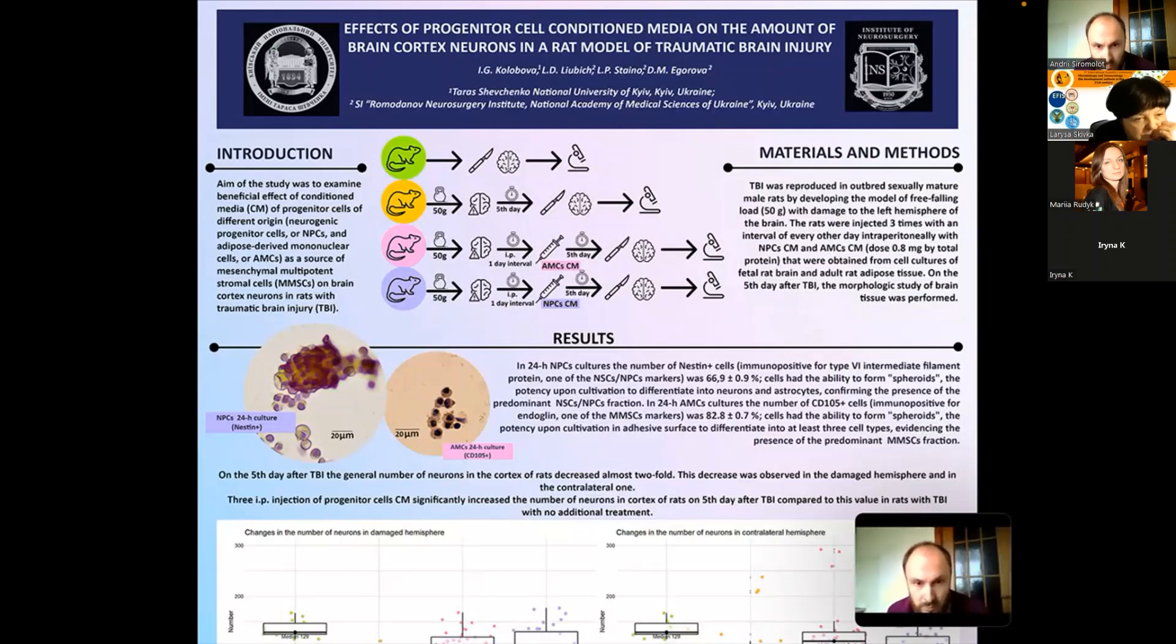So in our study, traumatic brain injury was reproduced by a free falling 50 gram weight with the damage to the left hemisphere of the brain. The rats were divided into four groups. Here you can see they are all color coded. The control group is green. The group with brain injury but without the treatment is orange. And two groups which received the treatment are pink and violet respectively.